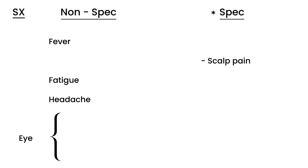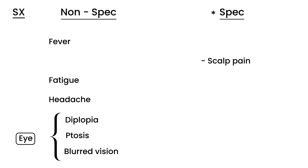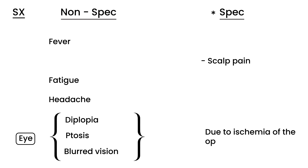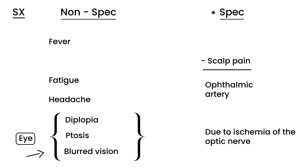There are also many vision-related symptoms: diplopia, drooping of the eyelid (also known as ptosis), and blurred vision. Instead of just memorizing this, why do eye symptoms happen? The vision symptoms occur because the arteritis eventually causes ischemia of the optic nerve. The blood supply to the optic nerve is compromised because of inflammation in the branch of the ophthalmic artery, leading to these eye symptoms. Vision loss is caused by arteritis of branches of the ophthalmic artery.